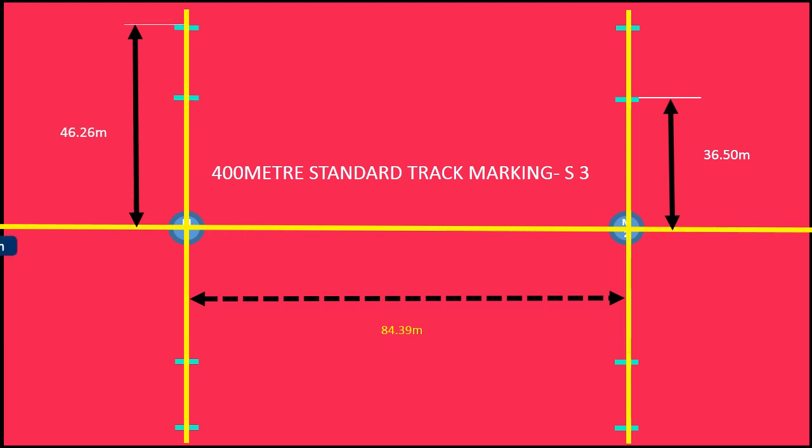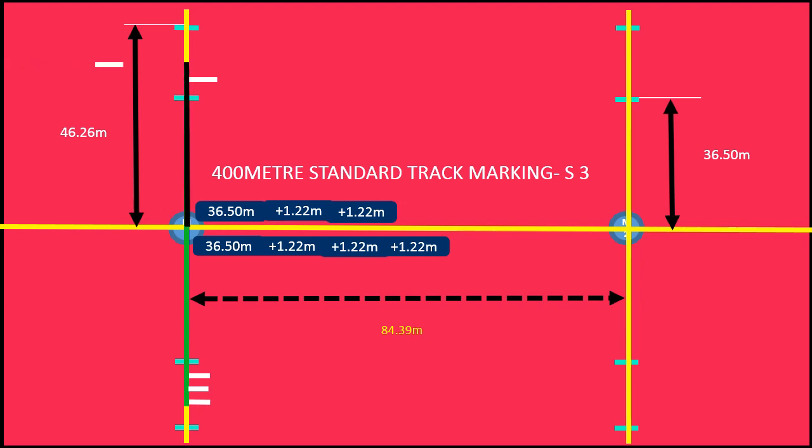Now we have to mark 36.50 meters arc downward or upward from M1 or M2 of track horizontal divide line. Here we have started downward first. Then mark 36.50 meters plus 1.22 meters from M1 only. Should not mark 1.22 meters separately. See carefully how it is measured. The same method of marking has to be carried out for all lanes. Then mark upward from M1 as what we did for downward. Now the same method of marking has to be done from M2 as what we did from M1.